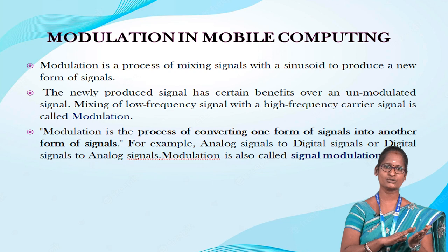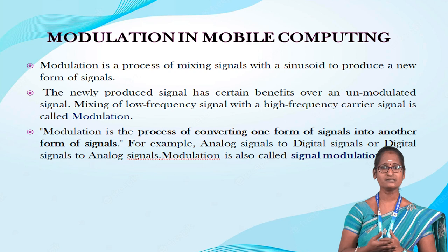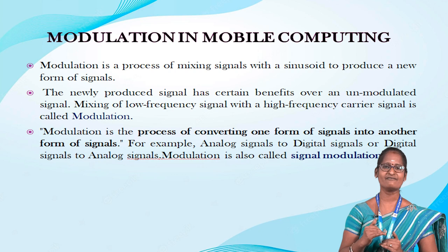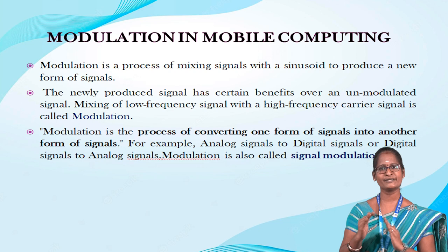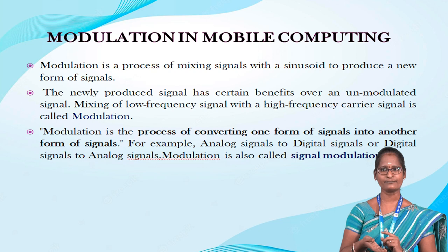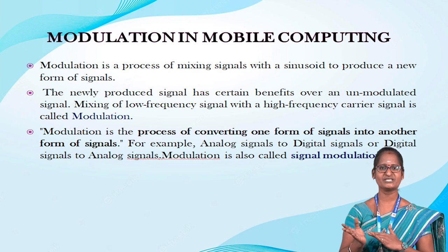Modulation is also called signal modulation. For example, suppose an analog transmission medium is available to transmit signals, but you have a digital signal that needs to be transmitted through this analog medium. So to complete this task, you have to convert the digital signals into analog signals. The process of conversion of signals from one form to another form is called modulation — analog to digital or digital to analog.